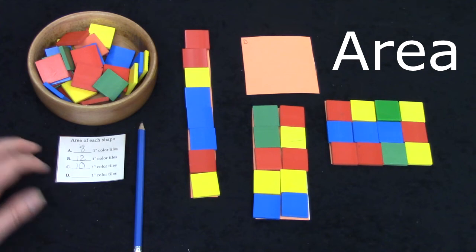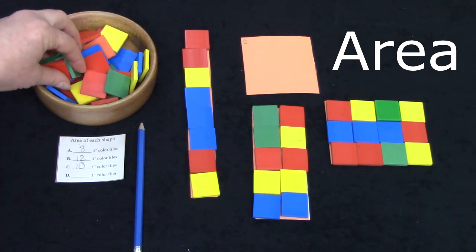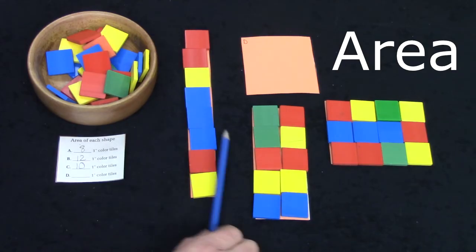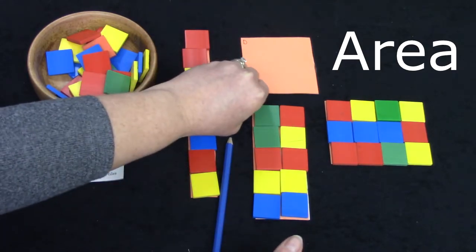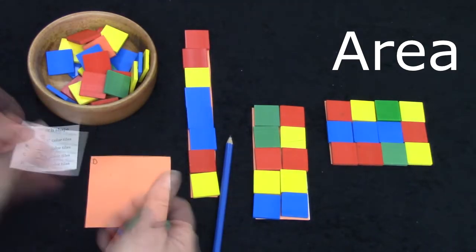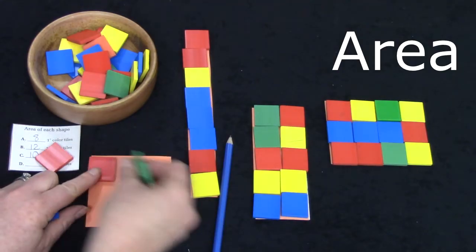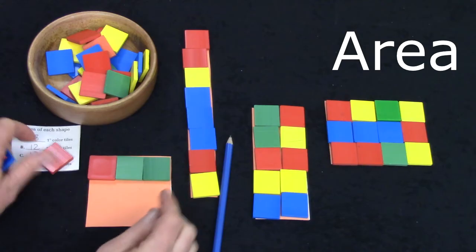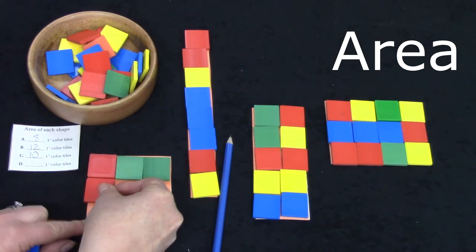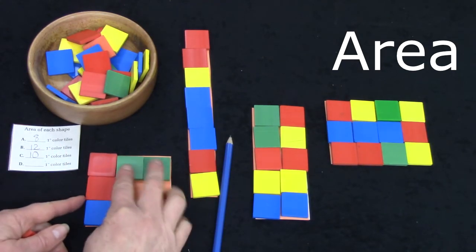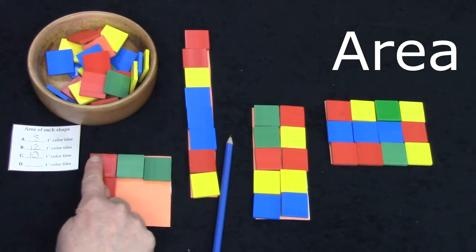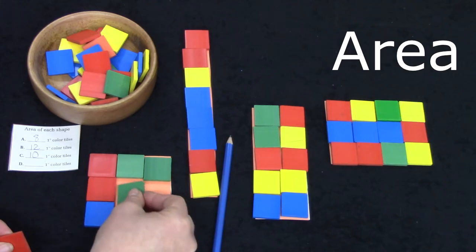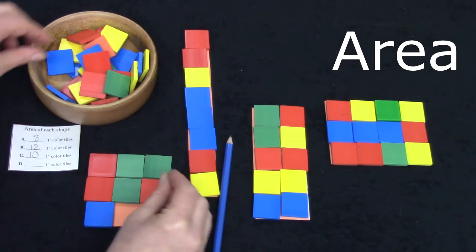We only have one shape left. Shape D. And I think I'm going to move D a little bit closer to me. Alright. I have one, two, three wide and one, two, three this way. Three by three. How many do you think it's going to take to cover it up?